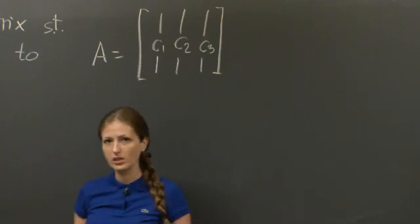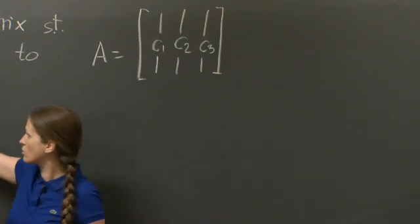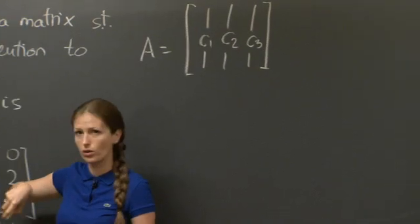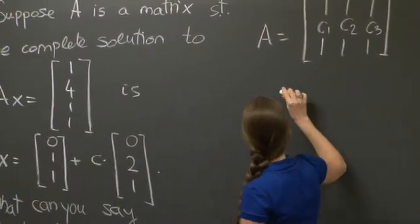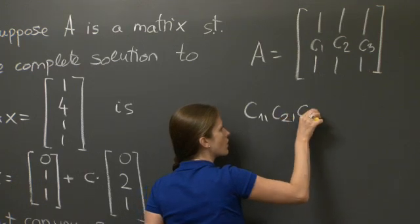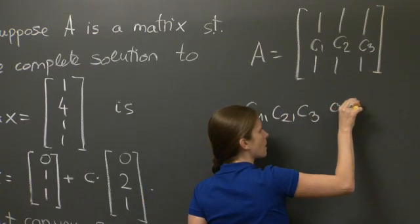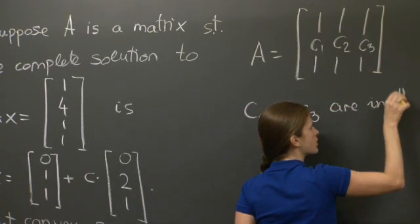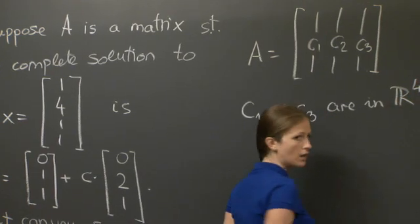And when I take some linear combinations of C1, C2, and C3, I'm going to get this vector here, 1, 4, 1, 1. So all the Cis, C1, C2, and C3 are vectors in R4.